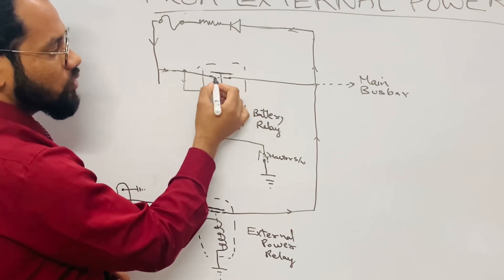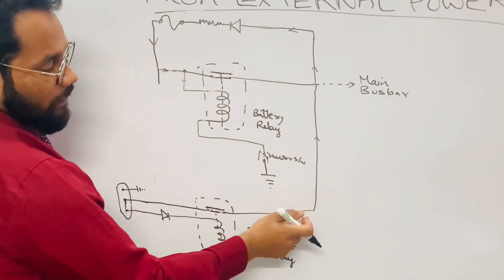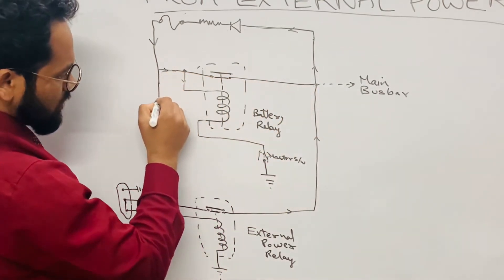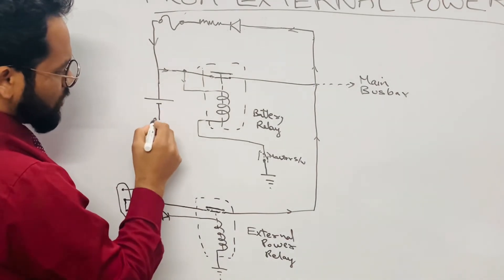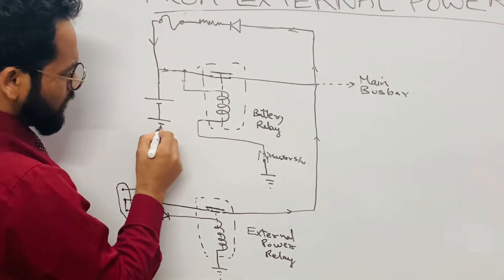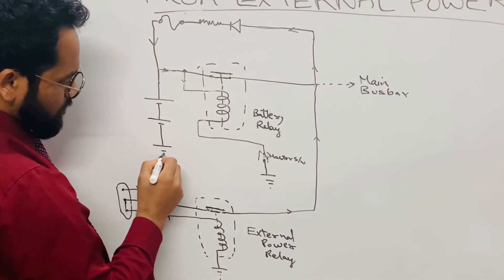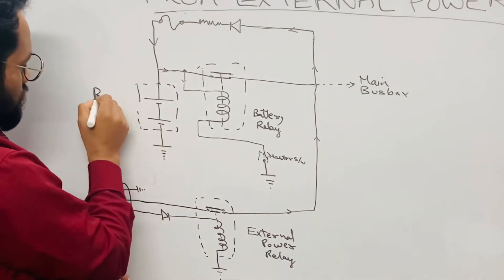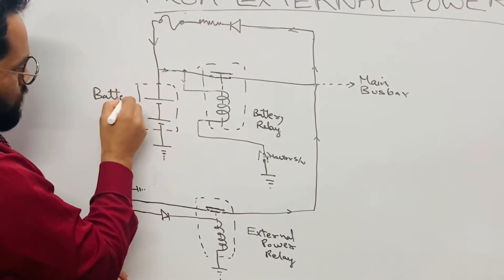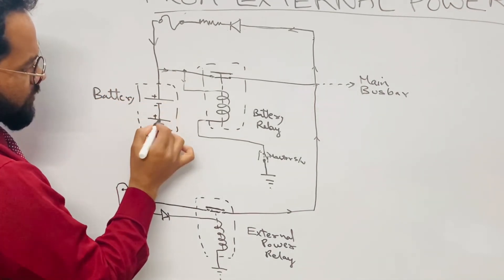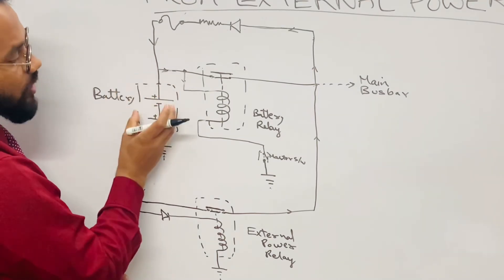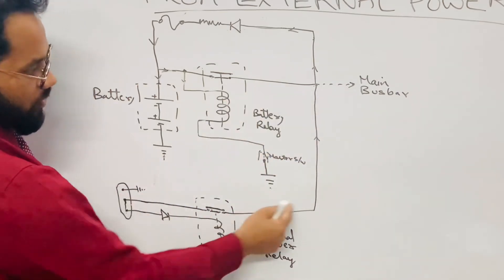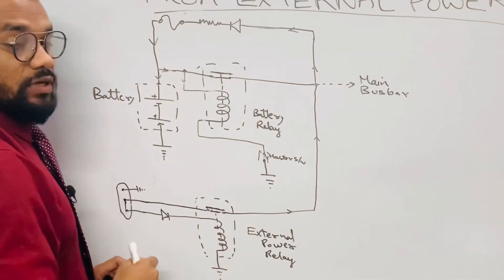When this contact is closed, the external power coming from here will follow this path. In this circuit we have the batteries — positive and negative terminals. The battery's grounding path is here. So for this battery to be charged, we are getting the current from the external power through this circuit.